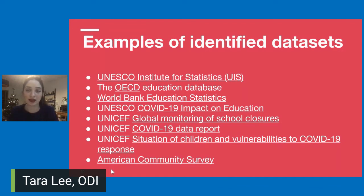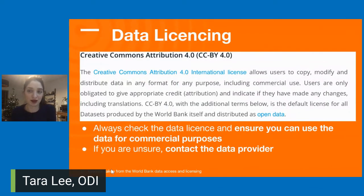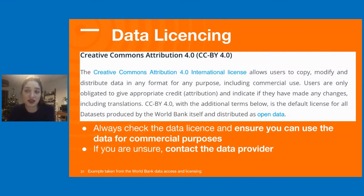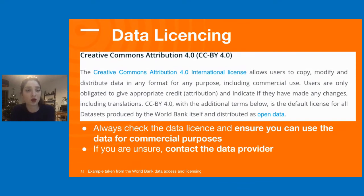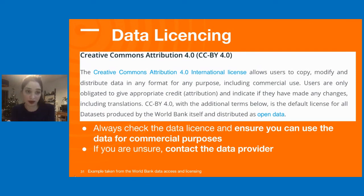I really want to reiterate the importance of making sure you have permission to use the data you find in this challenge. Usually the data license will be stated with the dataset — what you need to see is if it has an open license, like the example stated by the World Bank. If you can't find a license with the data or on the data provider's website, it's really important that you check with that provider that you have permission to use this data for your analysis. Not all data that you can access or read online is necessarily open, so please don't just assume that it is.